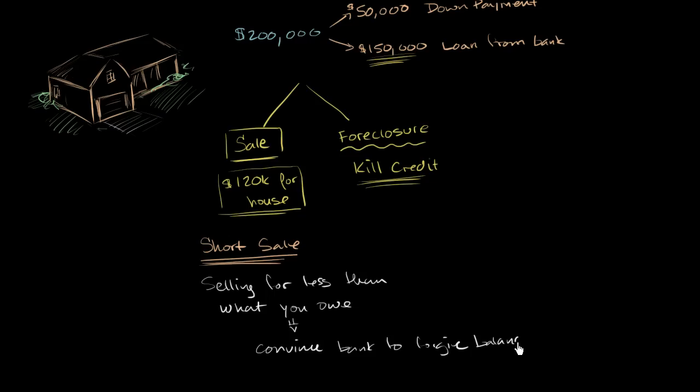So for example, you could go to the bank and you could say, look, I lost my job. We're having trouble paying for this house now. After paying real estate commissions and all the rest, I can only get $120,000 for this house. I know that I owe you $150,000. Can you forgive the extra $30,000 that I owe? And the bank might choose to do that.